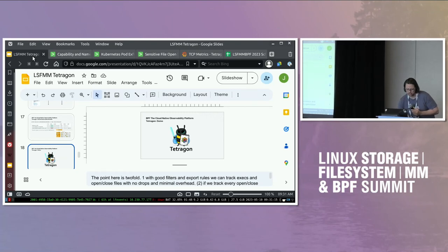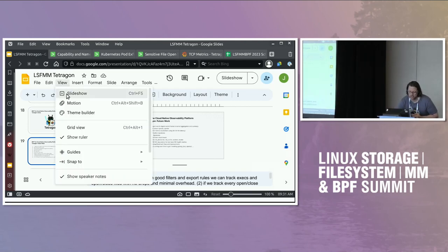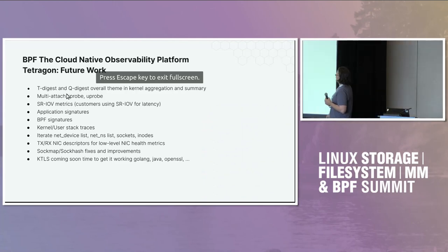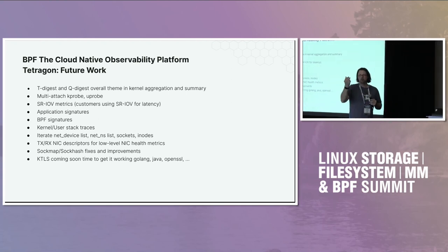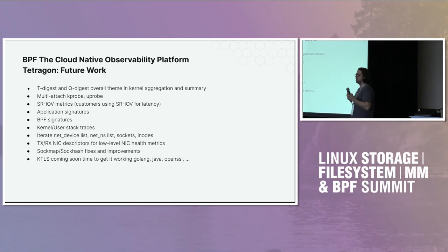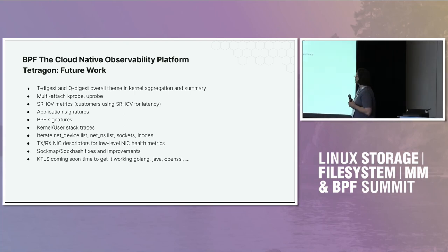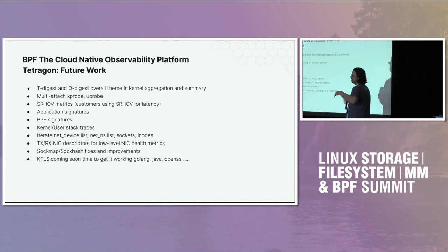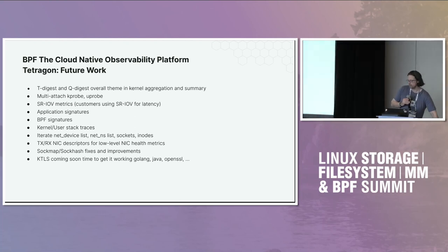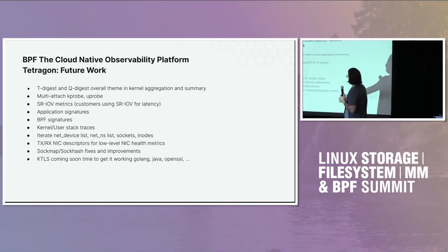My time is up. A quick look at what we're working on: T-Digest and Q-Digest for building summaries inside BPF. Multi-attach, because we're attaching to hundreds of things. SROV is interesting for low-level metrics on interfaces. Application signatures — we care about the SHA-256 signing of applications. BPF signatures haven't had anyone asking for them yet. Stack traces — we have some code but haven't deployed it.